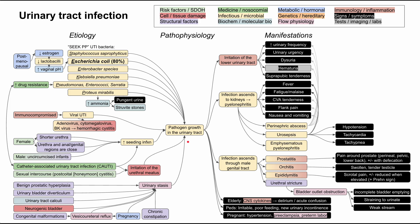This is a mechanism of disease map for urinary tract infections, or UTIs. I'll be talking about the etiology of UTIs, the pathophysiology, and the manifestations of UTIs. As in all of these flowcharts, the boxes are color-coded according to the legend up here.